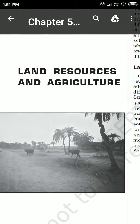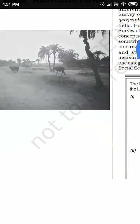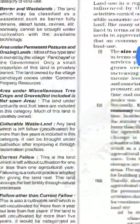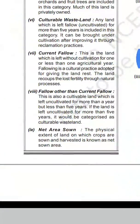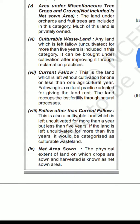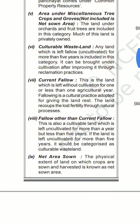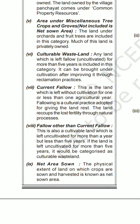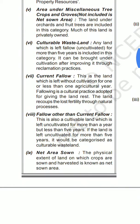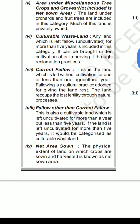We will be looking at land resources and agriculture. The first thing to start with is net sown area, fallow land, current fallow, and fellow land. Current fallow is an area which is left without agriculture for less than one year. Any area left without agriculture for one year is called current fallow.